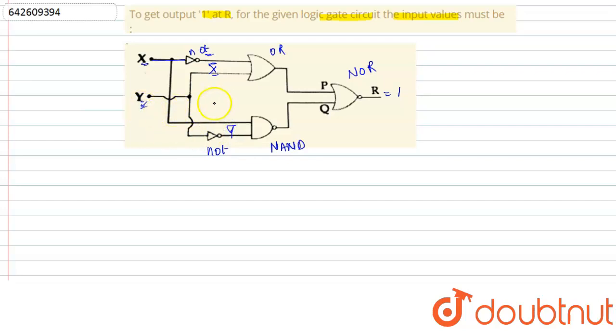So moving further, the input to the OR gate is x̄ and y. So the output of the OR gate will be x̄ + y.